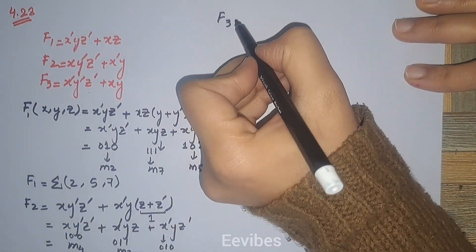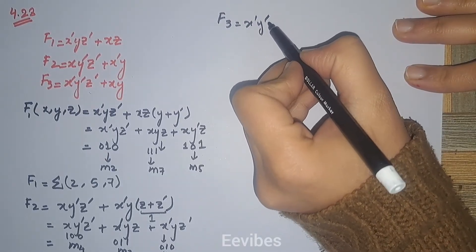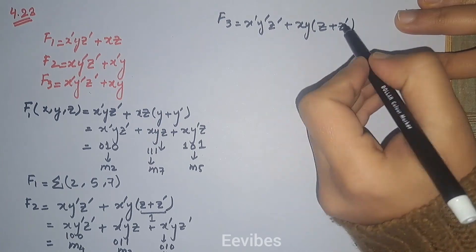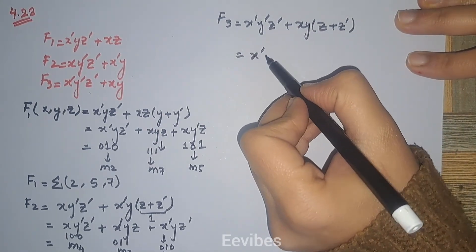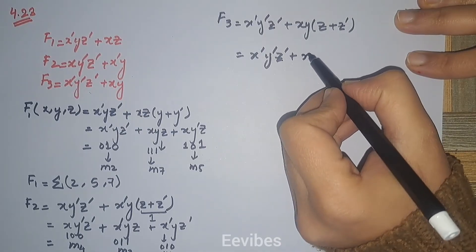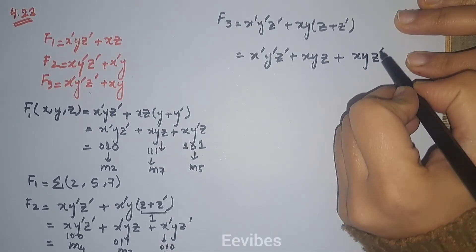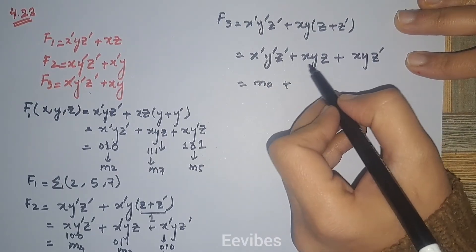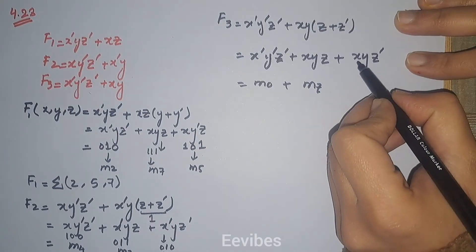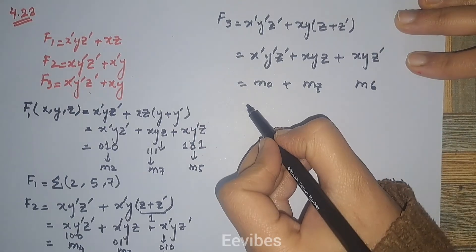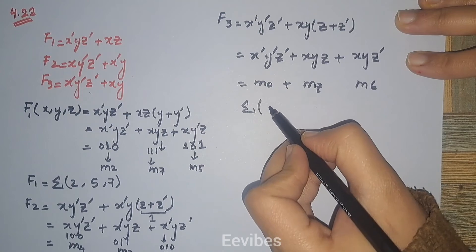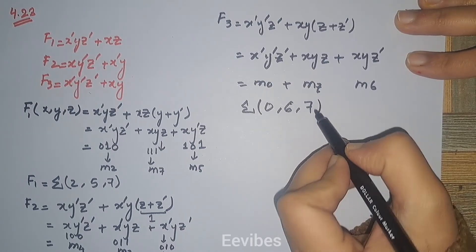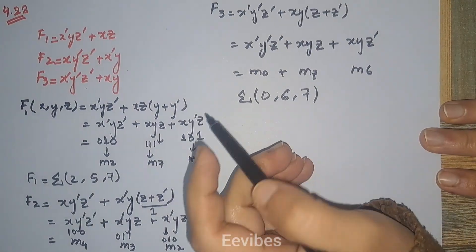The last function F3 is given as x-complement·y-complement·z-complement plus x·y. The literal z is missing from x·y, so we multiply by (z + z-complement). This becomes x-complement·y-complement·z-complement plus x·y·z plus x·y·z-complement. All terms primed gives 0-0-0, corresponding to m0; all 1s gives m7; and 1-1-0 corresponds to m6. So F3 is the summation of minterms 0, 6, and 7.